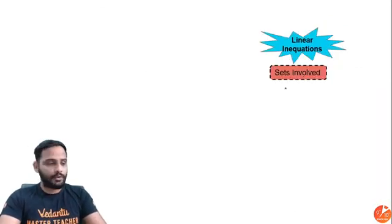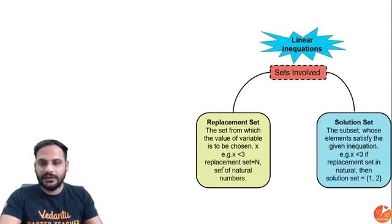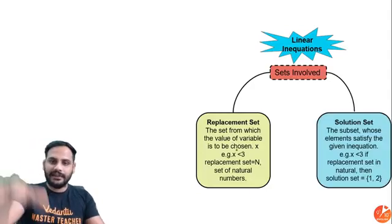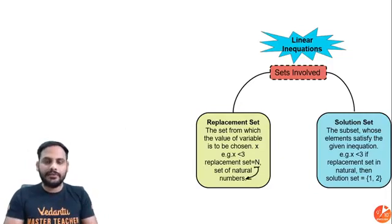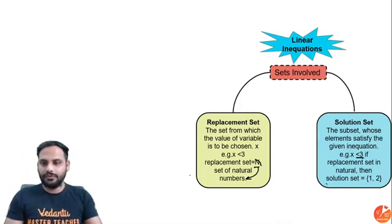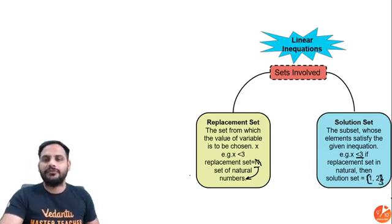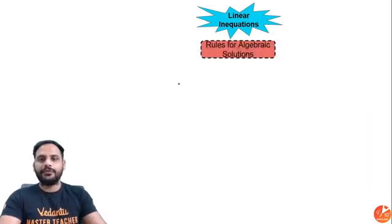In linear inequalities, two kinds of sets are involved. One is the replacement set - all the possible values of x from which x can be chosen. The solution set contains those values of x which satisfy the inequality. For example, if x is less than 3 and the replacement set is the set of natural numbers, then the solution set is 1 and 2 - the natural numbers that are less than 3.